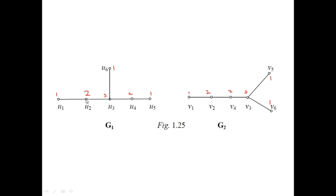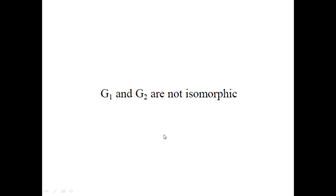Once again you can check for the degree-3 vertex, which is incident to 1, 2, 2. And here the degree-3 vertex is incident to 2, 1, 1. But what we need is 3 incident to 2, 2, 1. But here we got 3 incident to 2, 1, 1. Again the possibility gets failed. So no need to check the other possibilities. Just you can say that G1 and G2 are not isomorphic.